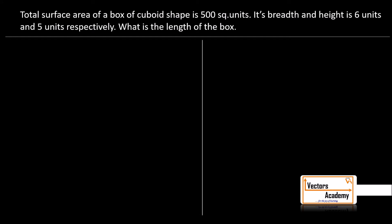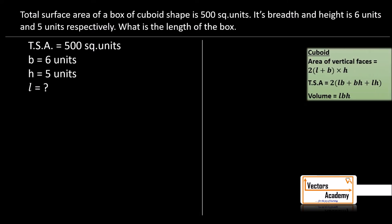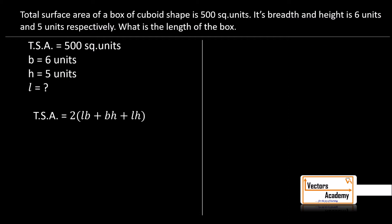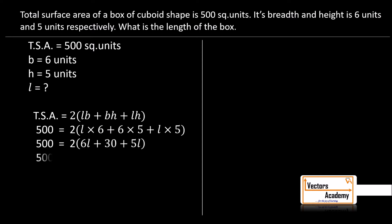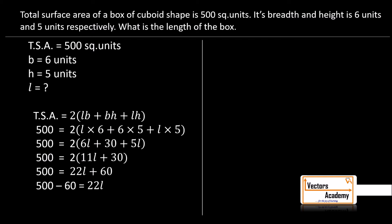The total surface area of a box of cuboid shape is 500 square units. Its breadth and height are given as 6 and 5 units. We have to find the length of the box. Using the formula 2(LB + BH + LH) = 500 and substituting B=6 and H=5, we solve to get 22L = 440. Dividing by 22, L = 20 units.